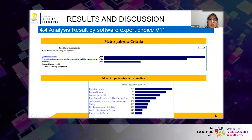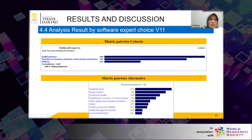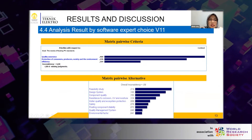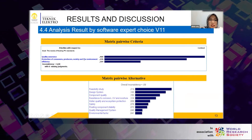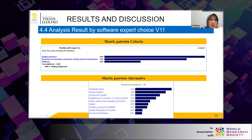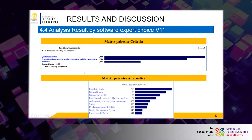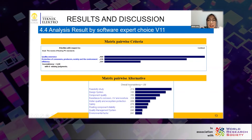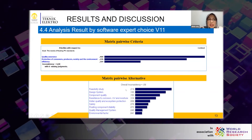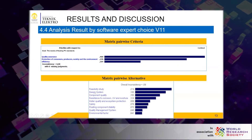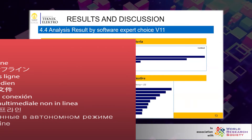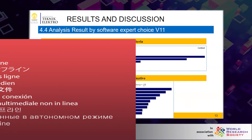Quality assurance is the most important determining criterion, as it is the main thing that needs to be considered in formulating a national standard for FPV. The second order is protection for consumers, producers, society, and environment, followed by the efficiency criterion. With an inconsistency value of 0.08, the result is consistent. The result for alternative attributes shows that the standard related to feasibility study ranks first, the standard related to system design ranks second, and the standard related to component quality ranks third. With an inconsistency value of 0.09, the result is also consistent.